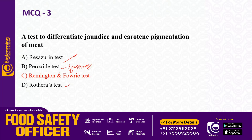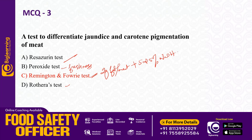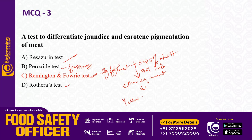The Remington and Fowdy test: take 2 grams of fat from the meat, add 5 ml of 5% sodium hydroxide, and boil for 1 minute. Observe the upper part — if there is yellow coloration, it indicates bile pigments.